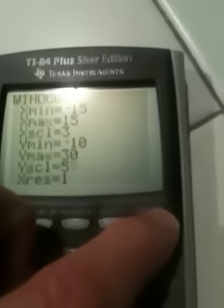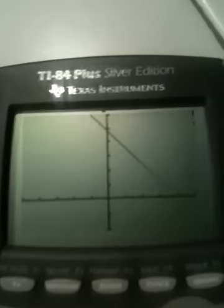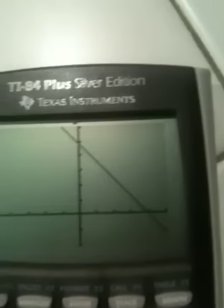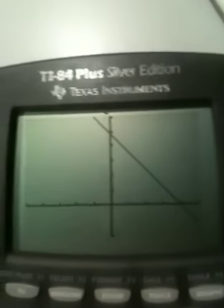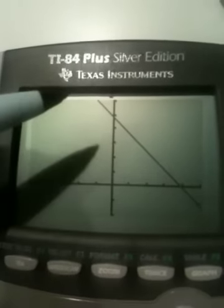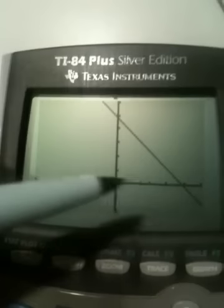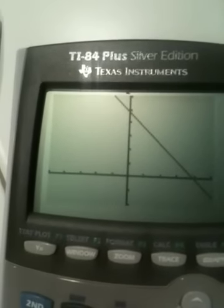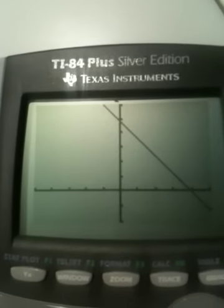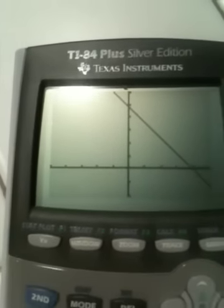And now when I hit graph with my new window, look how nice that is now. The reason that line is considered nice is because, remember what nice means, I can see the Y intercept and I can see the X intercept. And remember when you're counting these tick marks, the X tick marks are 3s and the Y tick marks are 5s.